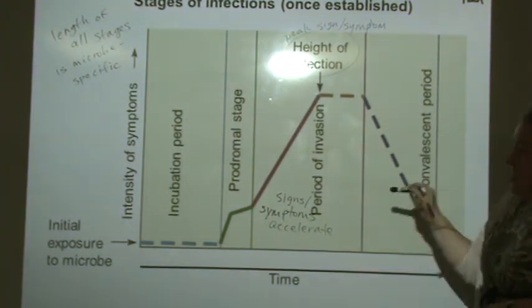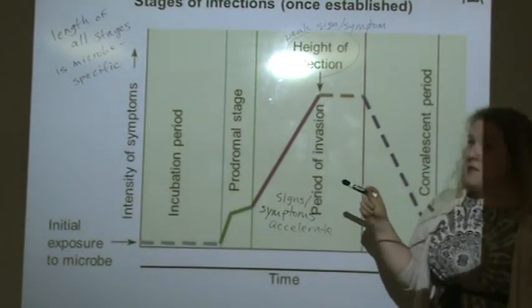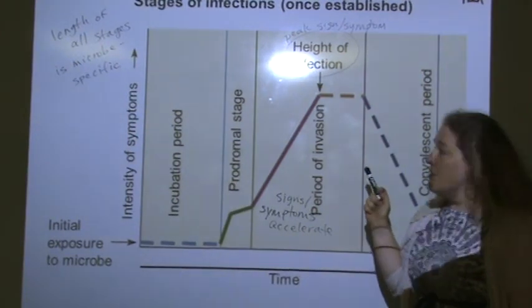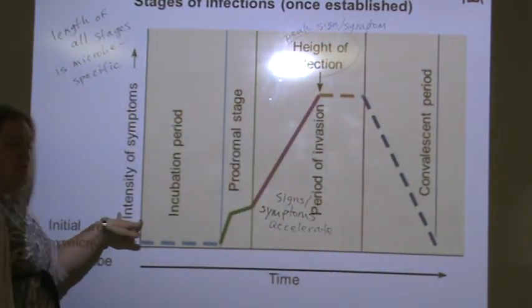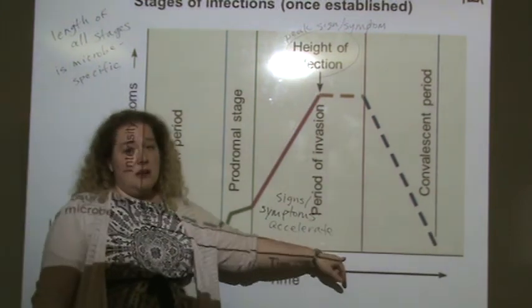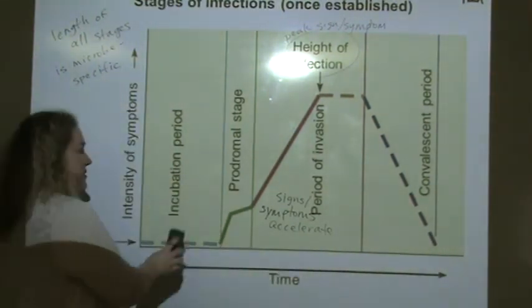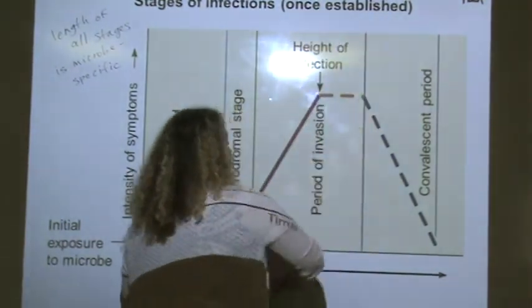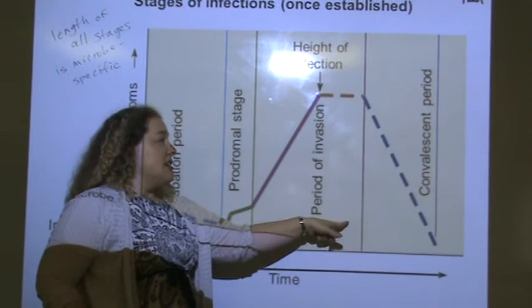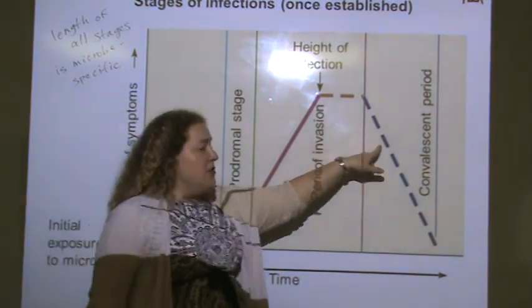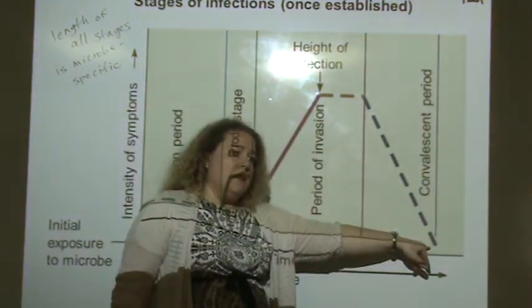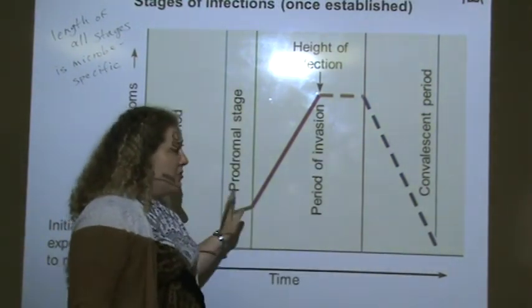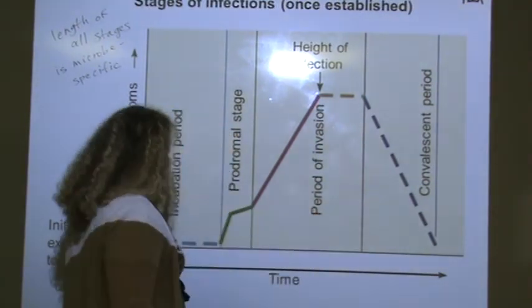Please note that this is not a curve of infectivity. This is not a curve of how infectious you are. It's a curve of measuring how bad do you feel as time goes by. There are some diseases that are infectious during all stages. There are some diseases that are only infectious during stage three. There are some that you can pass on to people even though you're feeling better and you're in the convalescent period. So that's important to know as well. You can be infectious in any stage.